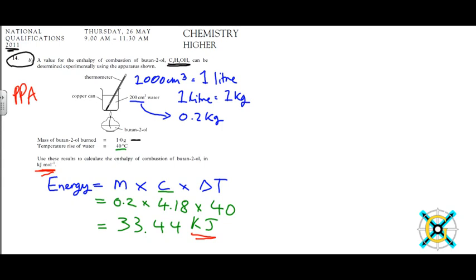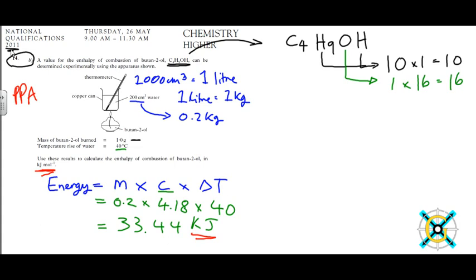So how we do that is we take our molecular formula and we work out the number of moles. We've got four carbon atoms, we've got nine hydrogen and an oxygen and another hydrogen. So if we work these out, we've got four carbons at 12 grams each, so we've got 48. If we sum those, we have 74 grams.